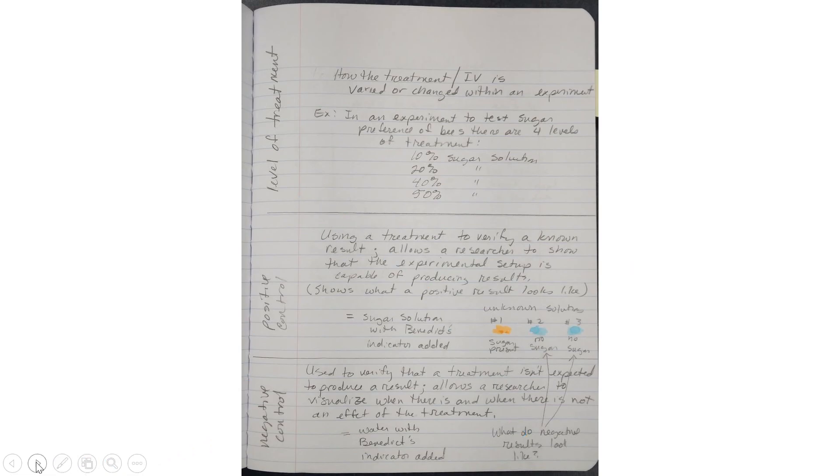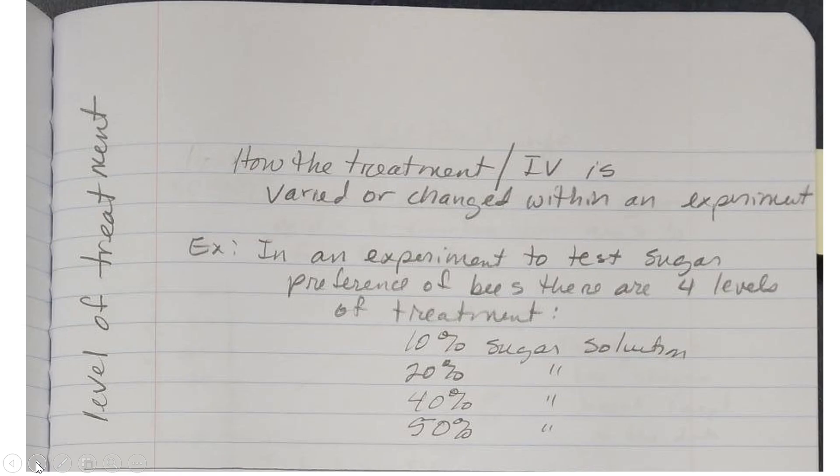First is level of treatment. Level of treatment, how the treatment, slash independent variable, is varied or changed within an experiment. If these abbreviations don't make sense to you, then go ahead and write it out. So an independent variable is the one thing you purposely change in an experiment.